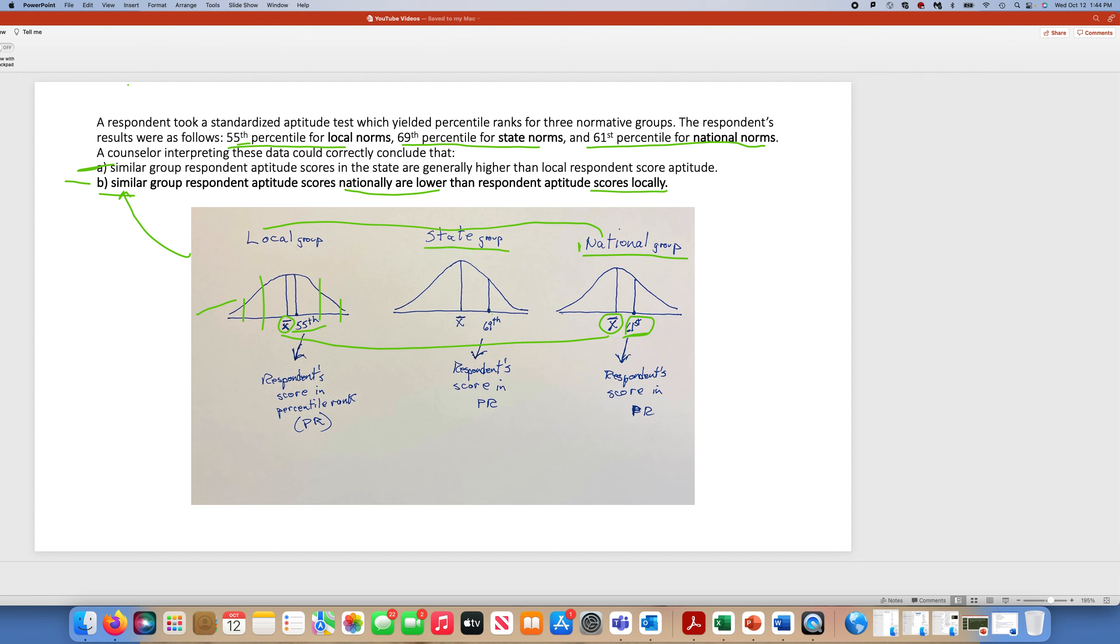And as you can see here, the state group, the state actually had the lowest mean of them because our student with that one score was in the 69th percentile.